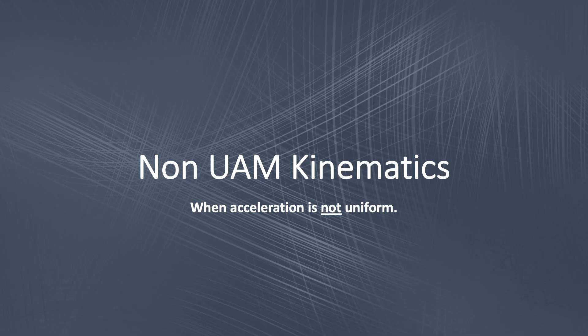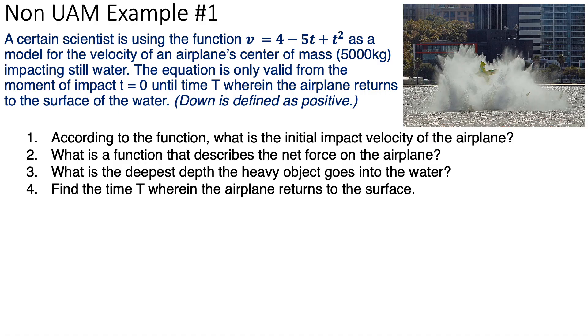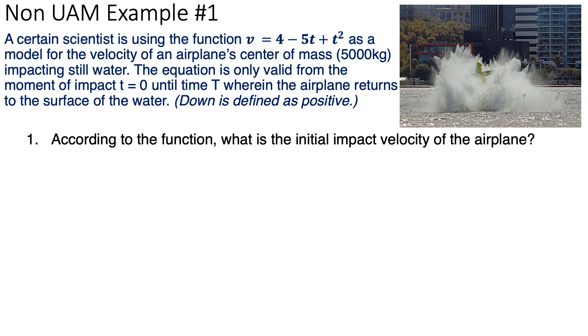Now, let's talk about scenarios where uniform accelerated motion does not apply. Take, for instance, this question right here. Stop the video and read the question. All right, welcome back. So, basically, a scientist has developed a velocity formula to describe an impact of an airplane into the water. The airplane is 5,000 kilograms. And the equation is only valid for a certain period of time. Past time t, the equation is no longer valid to describe the physics of what's going on.